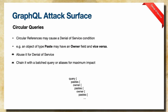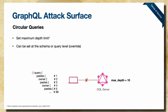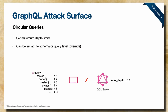From a blue teaming standpoint, the fix is relatively trivial here. Some implementations, like Ruby, allow you to set a maximum depth limit — for example, max depth of 10. If you receive a query nested 99 levels deep, you drop it altogether. The value you set depends on what makes sense in your own environment; you need knowledge of typical queries to avoid dropping benign requests.